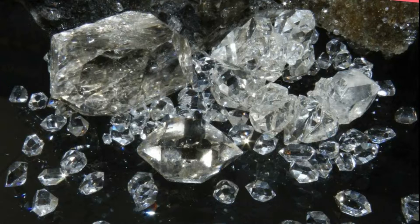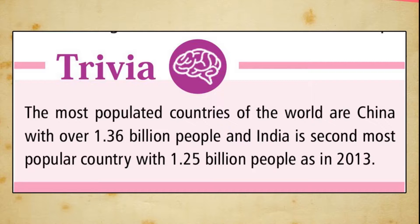Availability of resources also attracts people to an area because more employment opportunities are available there. Some regions are rich in minerals, like the diamond mines of South Africa and the oil fields in the Middle East, and these have attracted large numbers of people. The most populated countries of the world are China with over 1.36 billion people and India as the second most populated country with 1.25 billion people, as of 2013.